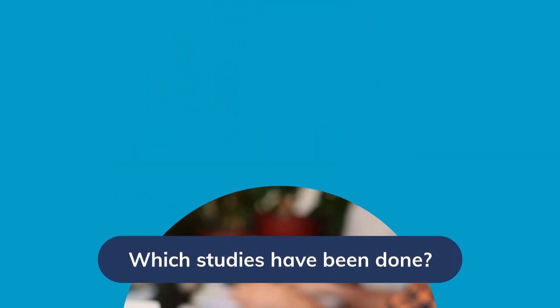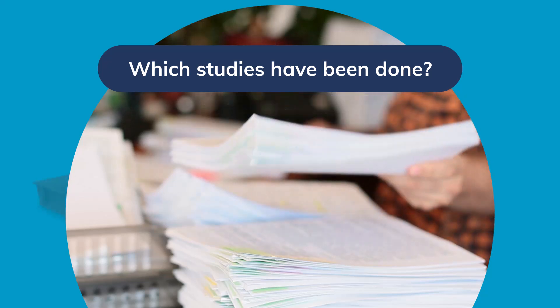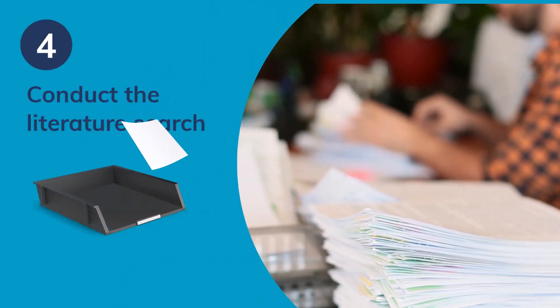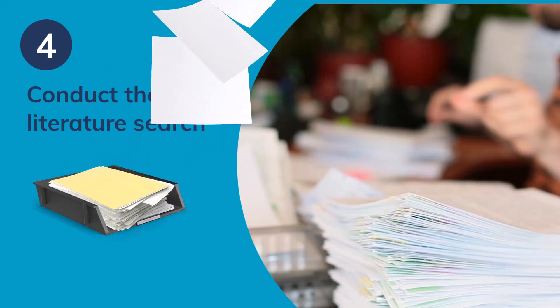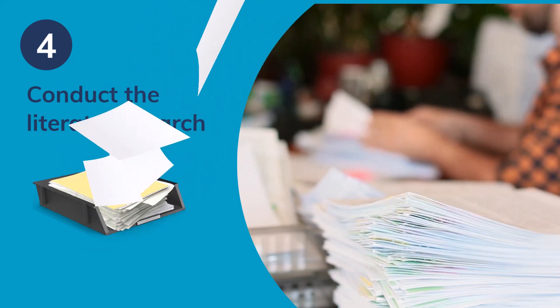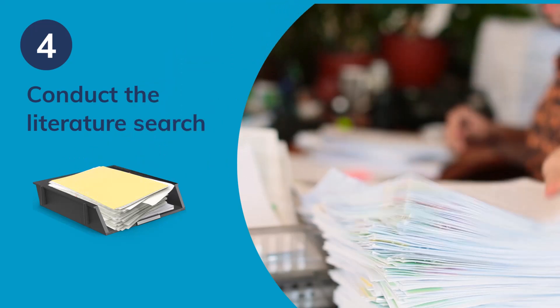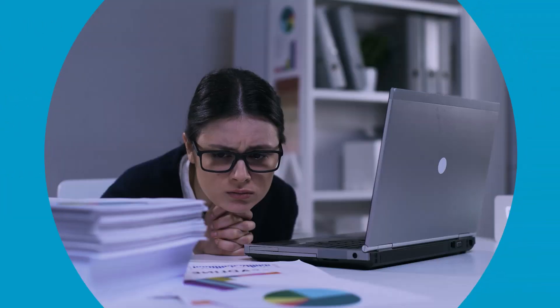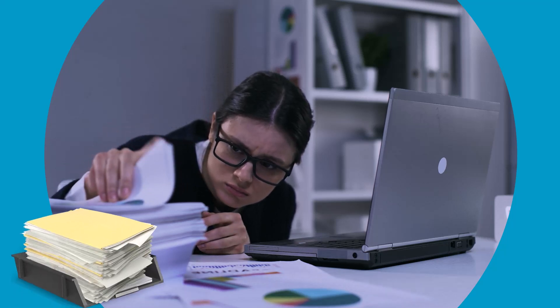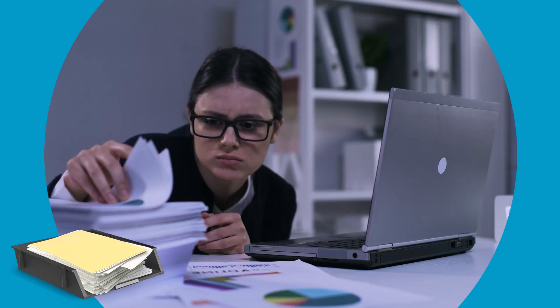In step 4, you conduct a literature search. You screen the abstracts and full-text papers to find the studies you are looking for. By the end of this step, you'll have gathered all the available articles on the measurement properties of the PROMs of interest. After you run the search, you can count how many articles you found and decide whether the review is feasible. If you find too many articles, you can narrow down your research aim or expand your review team.